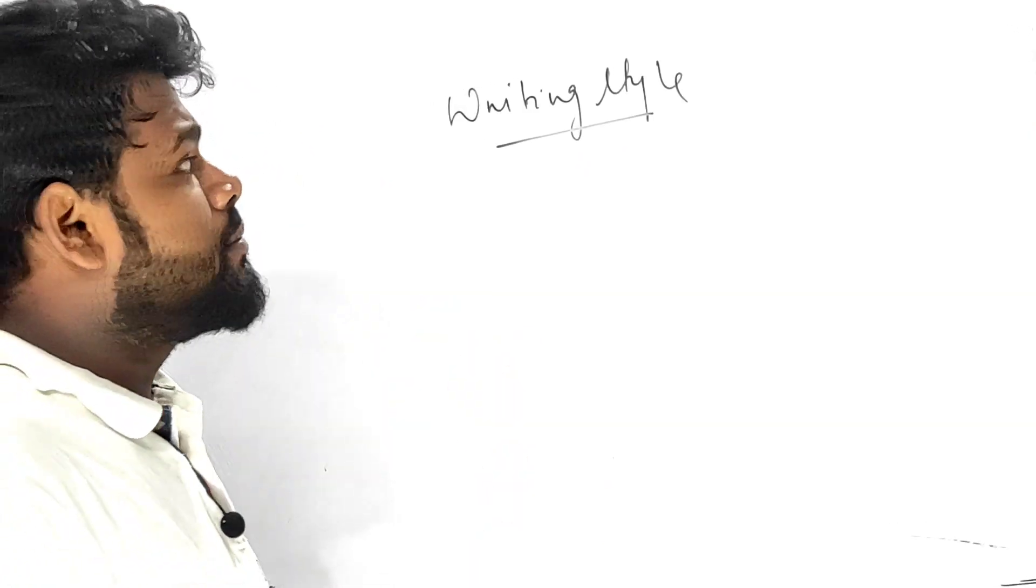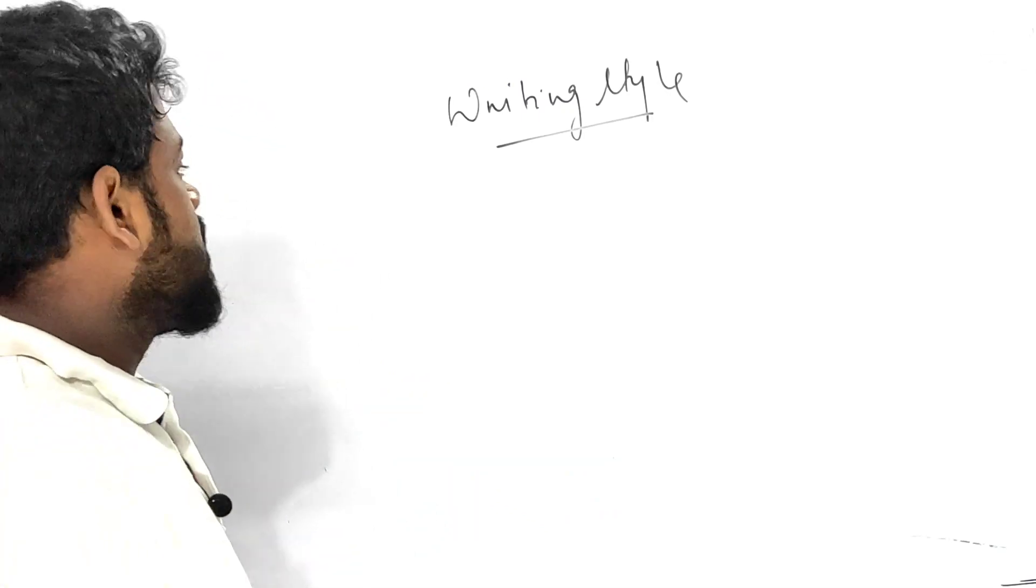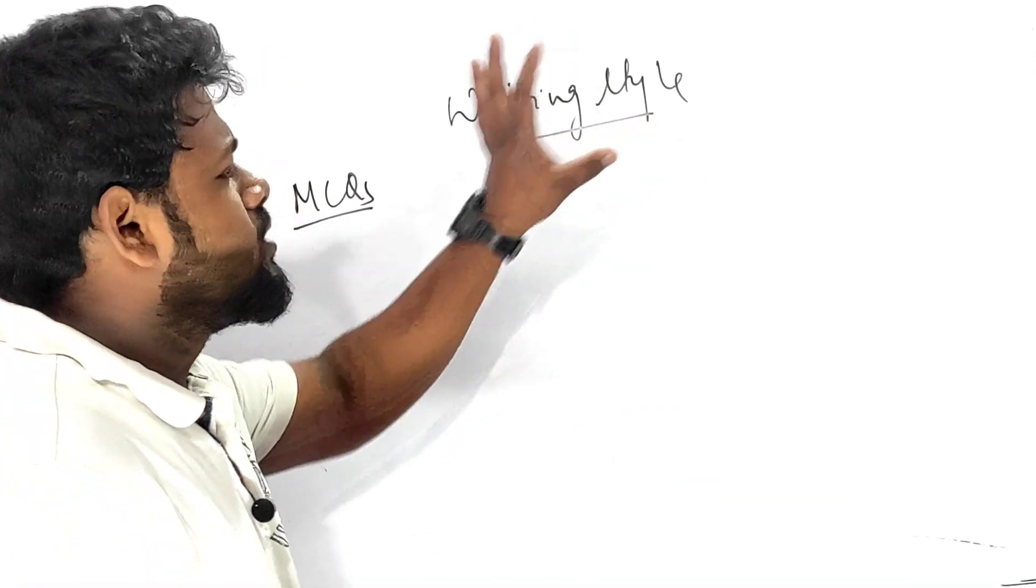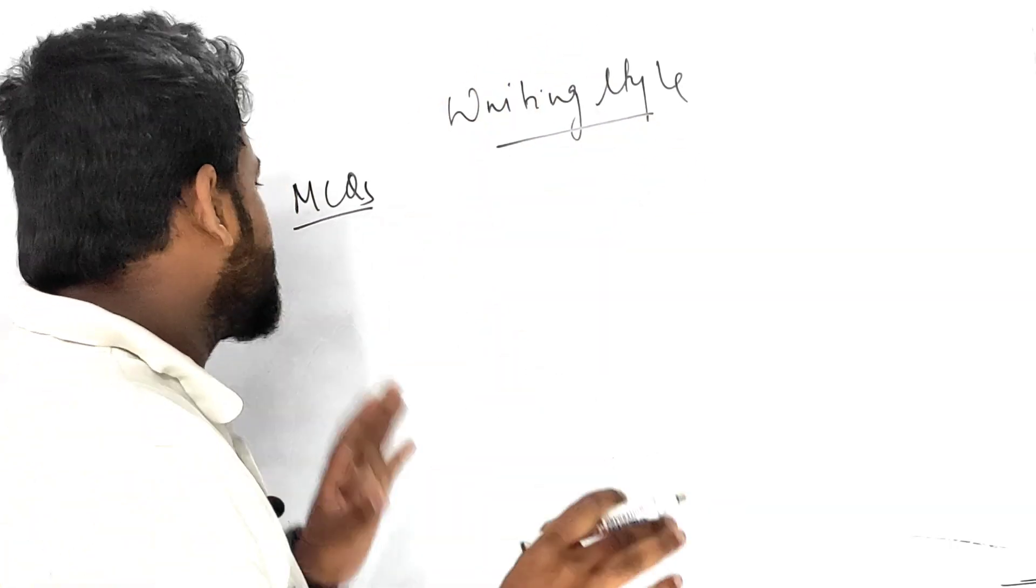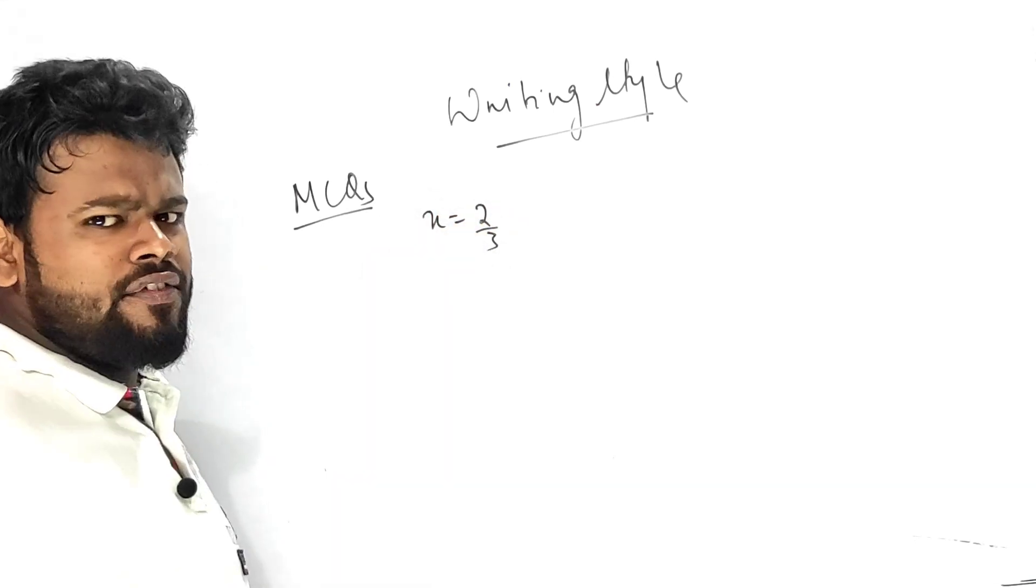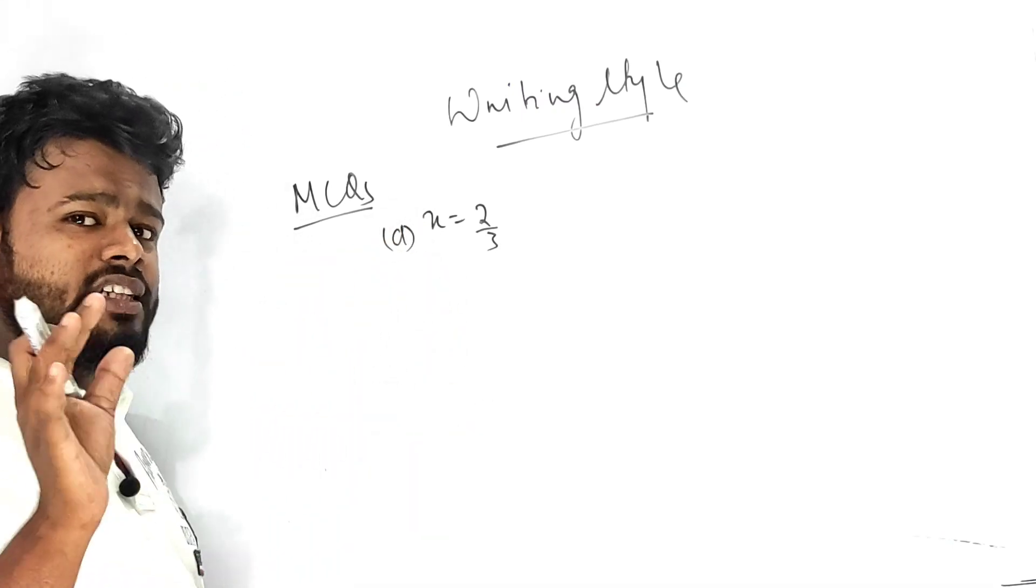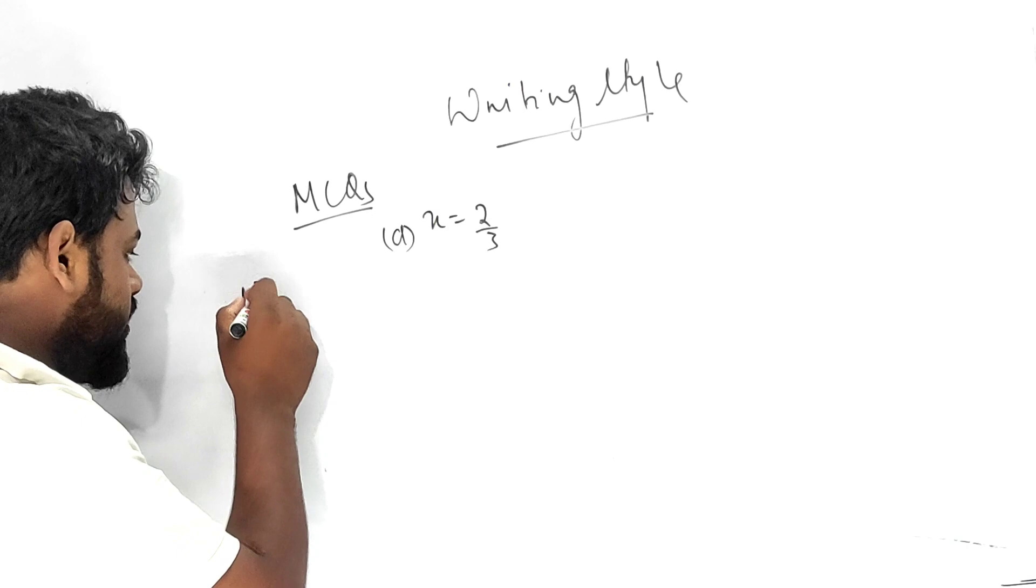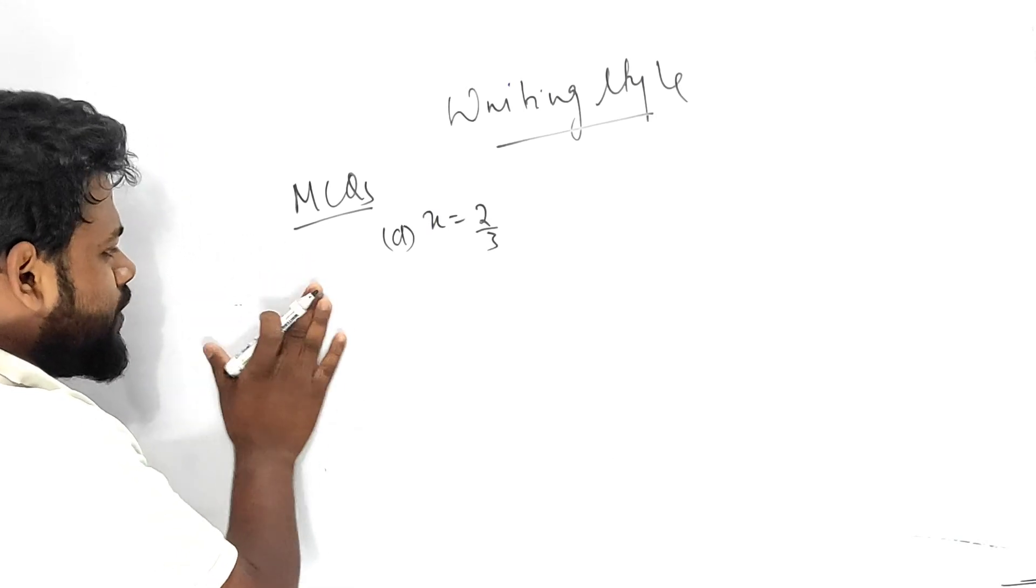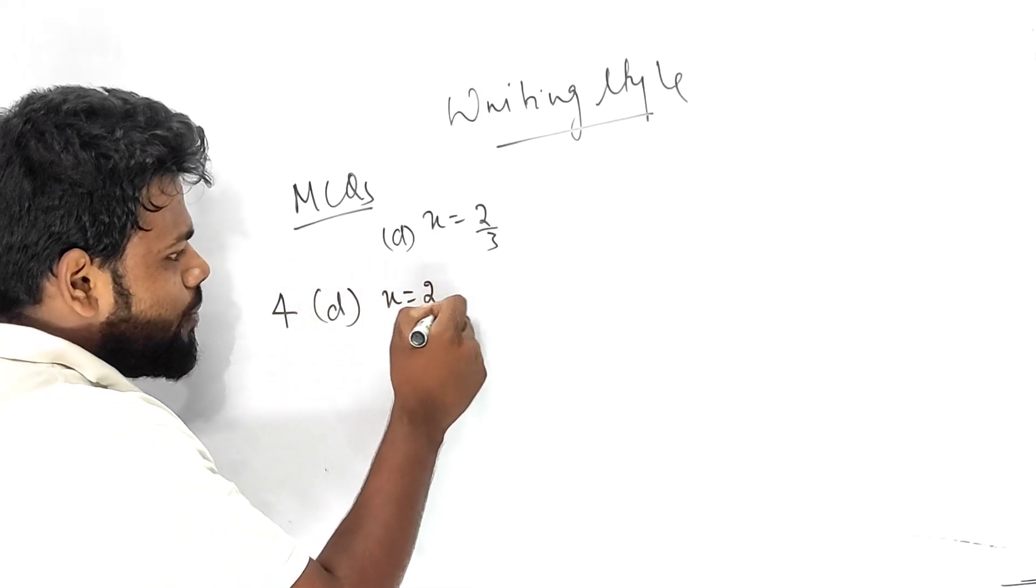I'm not talking about MCQ initially, but let me start from MCQ only. Many people I have found write only the option somehow. The answer came out as x equals to 2/3. What you have to write in the option? If it is option number d, you have to write the answer in the answer sheet: 4) d) x = 2/3. This is the right way to write the answer in the examination hall.